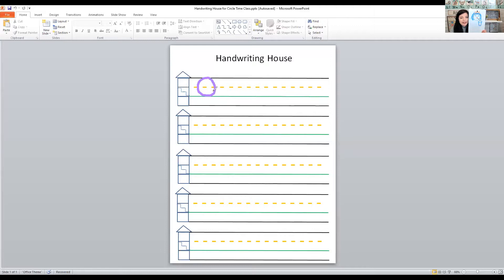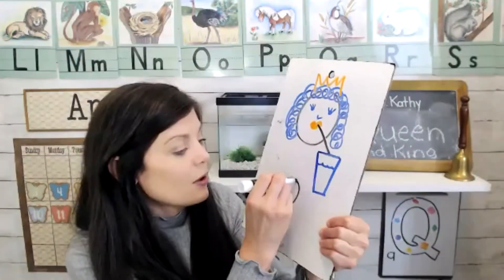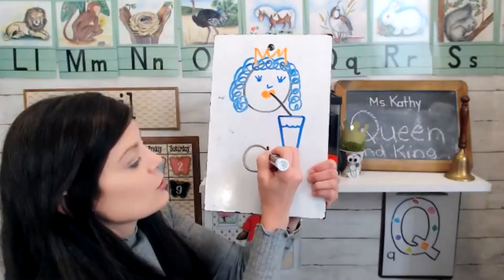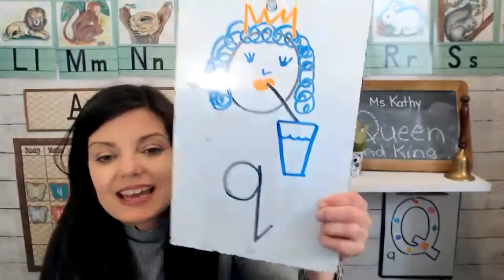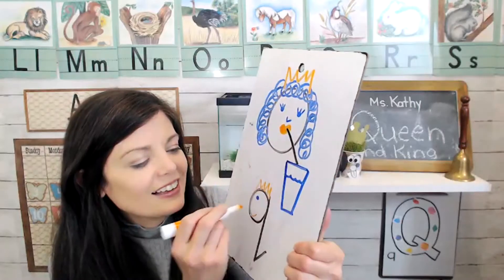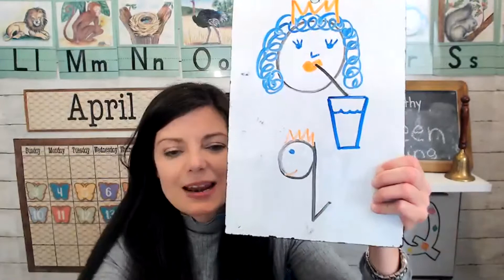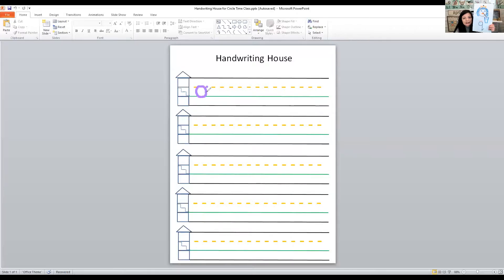To make the letter Q, make an O and a line. The line starts inside the O and comes all the way down to the green carpet. For the lowercase Q, it has a little O, and then a line that goes right beside it, all the way down and just kind of bounces up. We can turn this one into a princess with really long hair like Rapunzel.